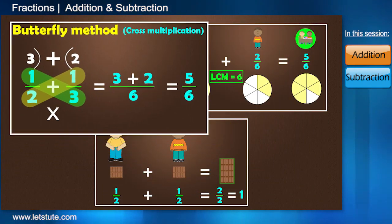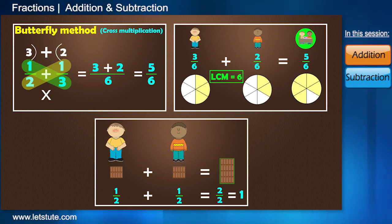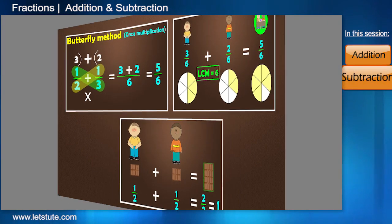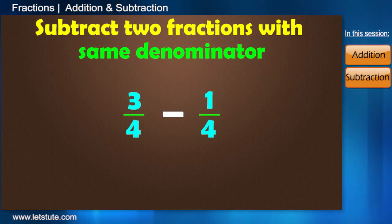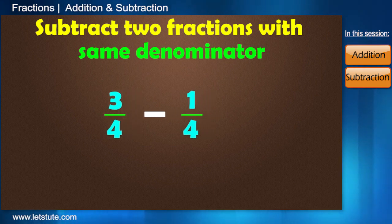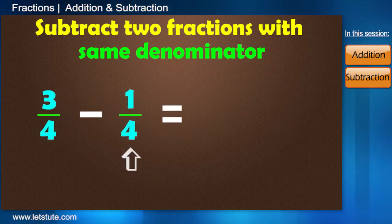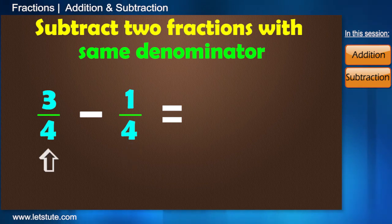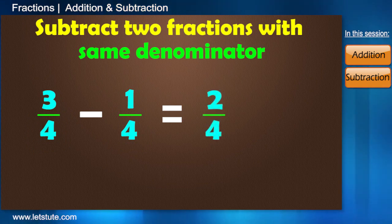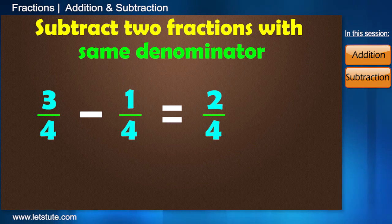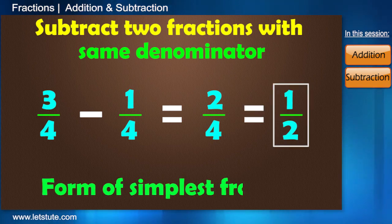Now, adding two fractions was really easy and if you understood it completely, then subtracting two fractions would be far easier. So, here, now we will subtract 1 by 4 from 3 by 4. Now, since the denominators are same, we can directly subtract them and the answer comes to 2 by 4. Or, we can further write it as 1 by 2 in the form of simplest fractions.